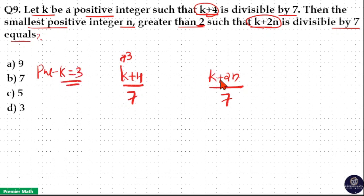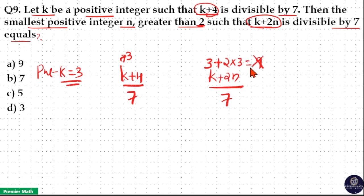With k equal to 3, we check k plus 2n for divisibility by 7. If I put option d, that is n equals 3, this will become 3 plus 6 equals 9, which is not divisible by 7. If I put n equals 5, this will become 3 plus 10 equals 13, which is also not divisible by 7. So option c is eliminated.